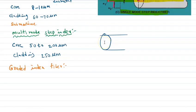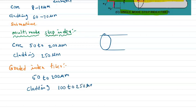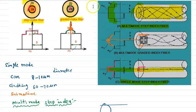For graded index fiber, the core diameter ranges from 50 to 200 micrometers and the cladding diameter is 100 to 250 micrometers. The refractive index is circularly symmetric and changes continuously in the radial direction within the core, so light rays undergo continuous refraction in the core.